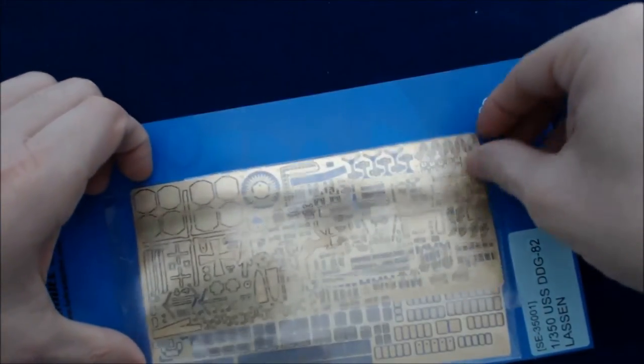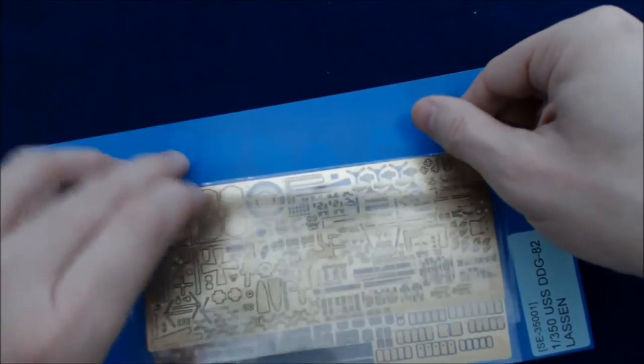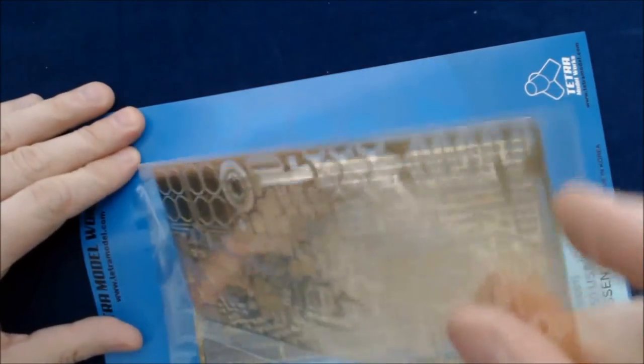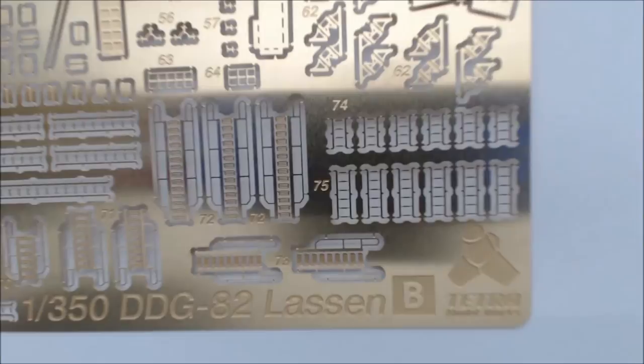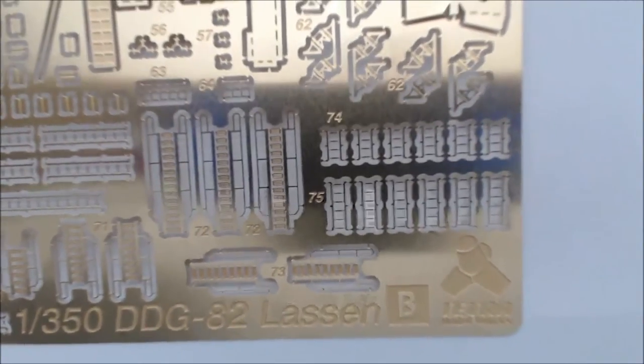And then here's the actual different photo etch sheets. Again, I'm not sure I'll take these out. Maybe we can get them up close and just look at them through the plastic, through the protective sleeve. Here's some of the details. So here you can see clearly indicated by Tetra and for the Lassen.